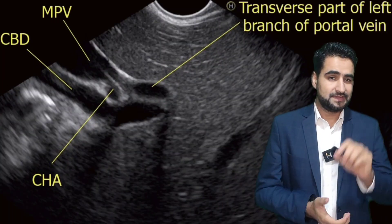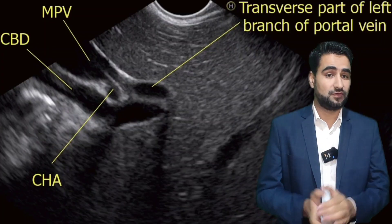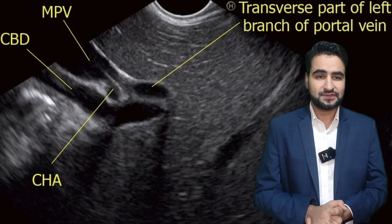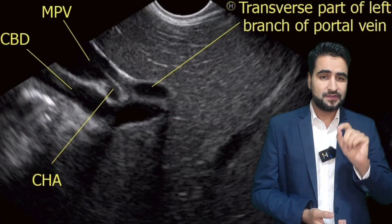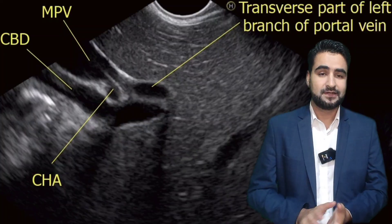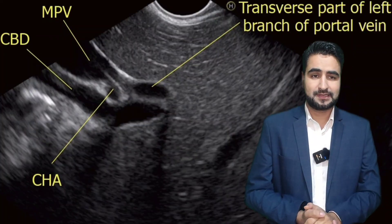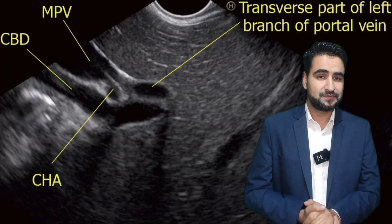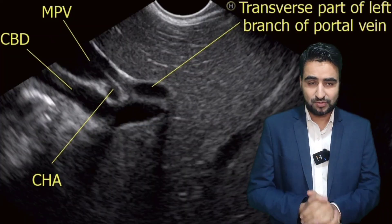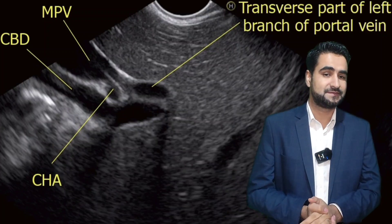In this first image, with a slight clockwise rotation from the neutral position, we start following the left branch of the portal vein as it courses through the transverse fissure of the liver. A few key landmarks to note here: the common hepatic artery appears anteriorly, the common bile duct is seen running parallel, and most importantly, the transverse part of the left portal vein is visualized clearly. This step confirms that you are aligned with the portal vein plane and ready to trace its main branches.